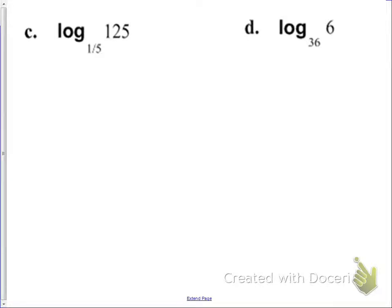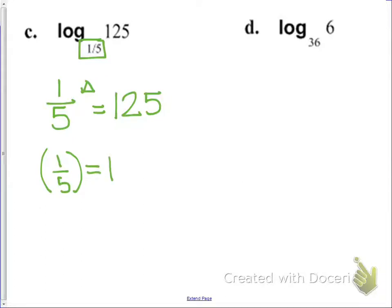Let's do two more: log base 1/5 of 125 and log base 36 of 6. For log base 1/5 of 125, we want 1/5 to what power gives us 125. Thinking about negative exponents, you'd raise 1/5 to the negative 3rd power to get the reciprocal 125, because 5 to the 3rd is 125. So log base 1/5 of 125 is equal to negative 3.